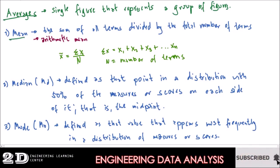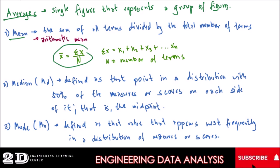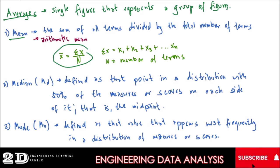We have the mean, which is the sum of all terms divided by the total number of terms. Then we have the median, which is defined as the point in the distribution with 50% of the measures or scores on each side of it — that is the midpoint. When we have data, there is a so-called imbalance if we are just getting the midpoint, so there is some interpolation which will be discussed in the next few videos.